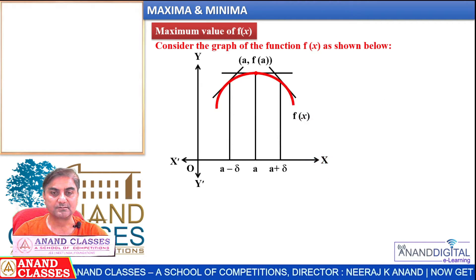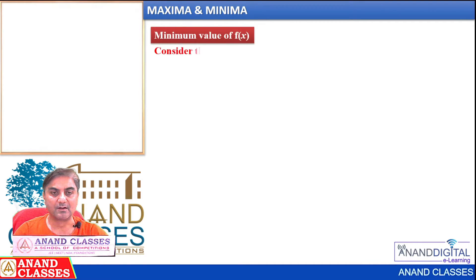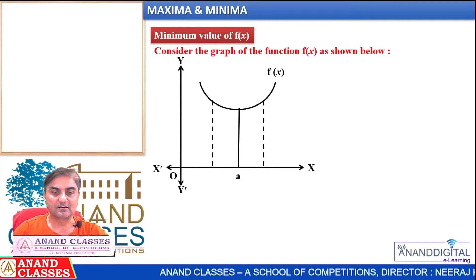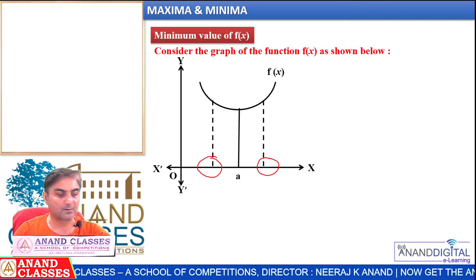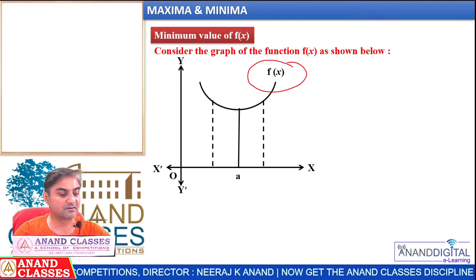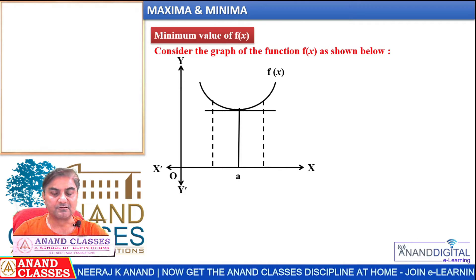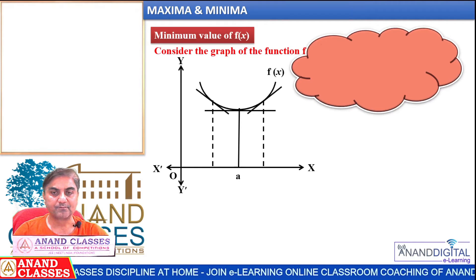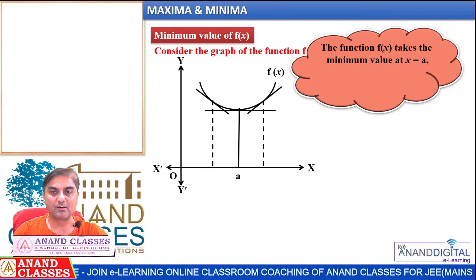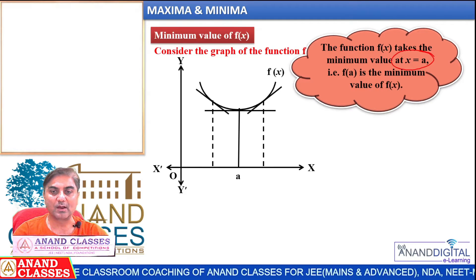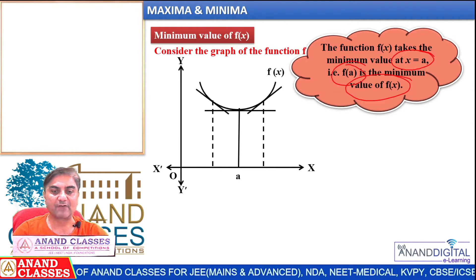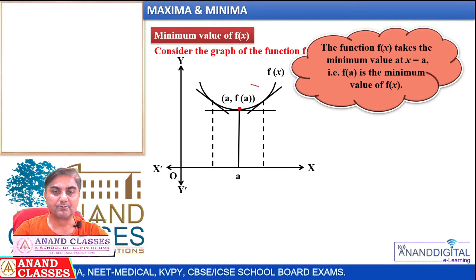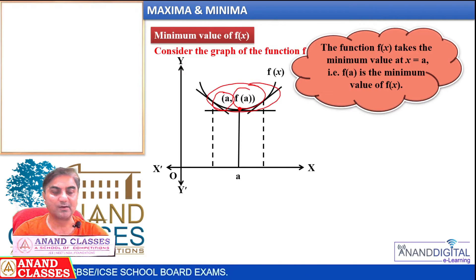Now, minimum value. For example, consider the graph at point a. These are the neighborhood points a − δ and a + δ. This is the graph of function f(x). This is the tangent at point a, and these are the tangents at the neighborhood points. The function f(x) takes the minimum value at x = a, so f(a) is the minimum value of f(x). At point a, the minimum value is f(a).